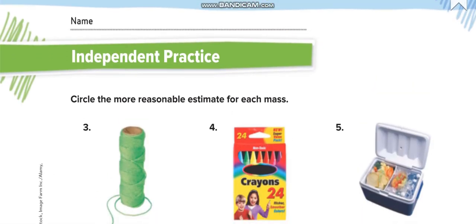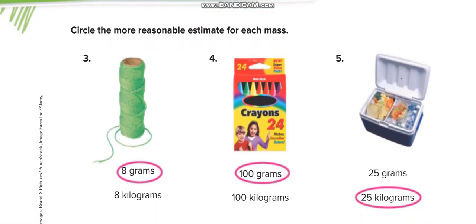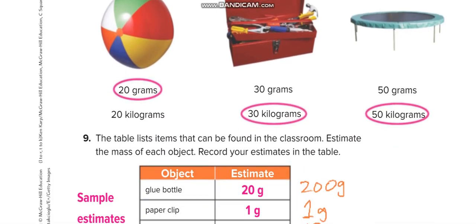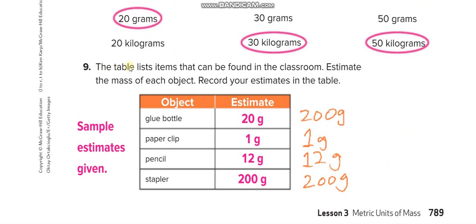Similarly, here on the next page, in independent practice, you have to solve it by yourself first and then match your answers through this video. In question 9, the table lists items that can be found in the classroom. Estimate the mass of each object, record your estimate in the table. So what do you think? A glue bottle is around how much? You can say 20 grams or maybe 200 grams if the bottle is a little bit big. If the bottle is small one, you can say just 20 grams. A paperclip, one gram, very small. Pencil, 12 grams or 10 grams.